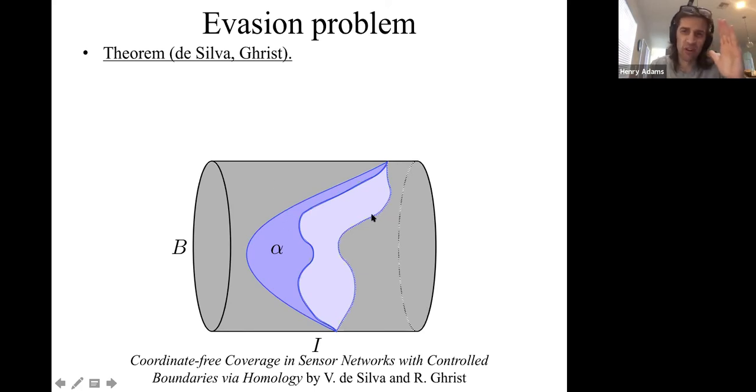Alpha is not in a single point of time. Time is varying from zero on the left to one on the right. But if you can find this blue sheet alpha, which is in the covered region in space-time, then certainly there's no evasion path. Because any intruder that passes from time zero to time one would have to at some point pass through this blue sheet alpha, at which point it would be in the sensed region and get detected.